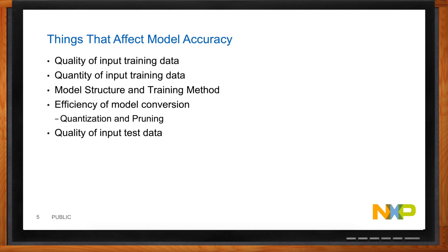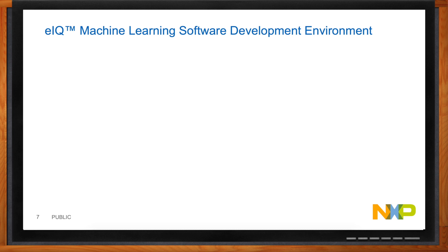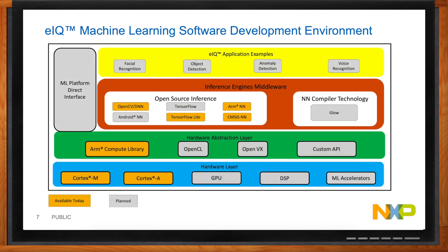Having a good platform for neural networks is crucial. NXP has something called EIQ — a software development environment that provides inference engines to run models of all types on NXP's embedded systems, both microcontrollers and application processors. Several inference engines are available today using the ARM Compute Library for Cortex-M and Cortex-A cores. Future features planned include GPU, DSP, and hardware ML accelerators, plus application examples like facial recognition, object detection, and voice recognition.